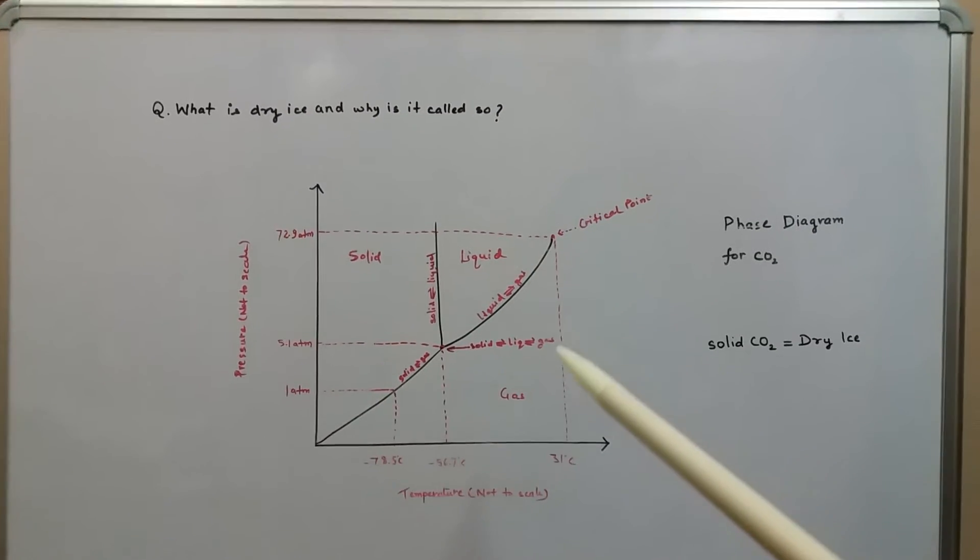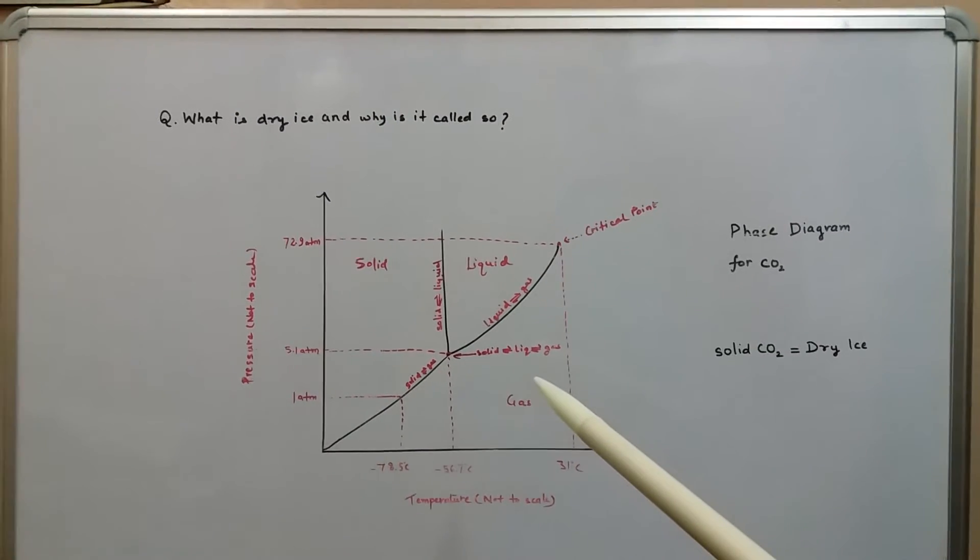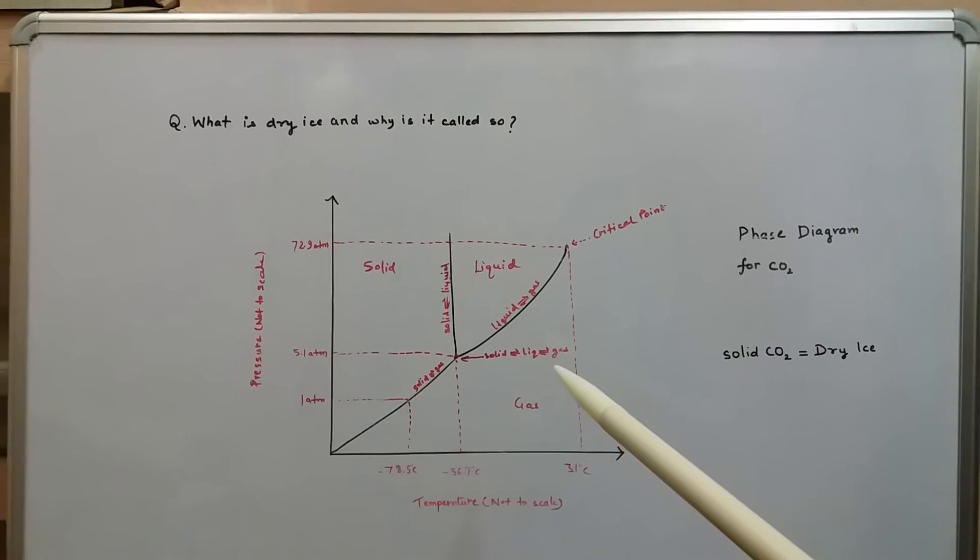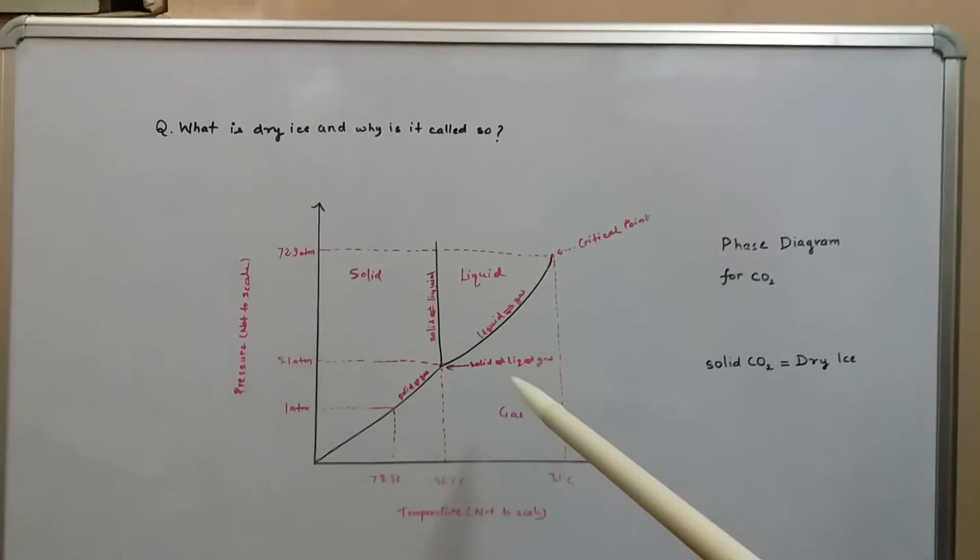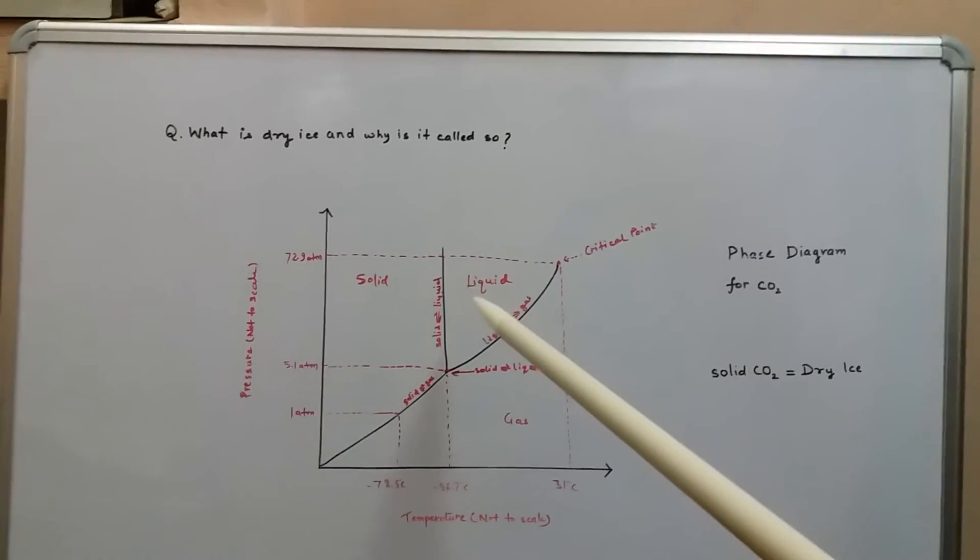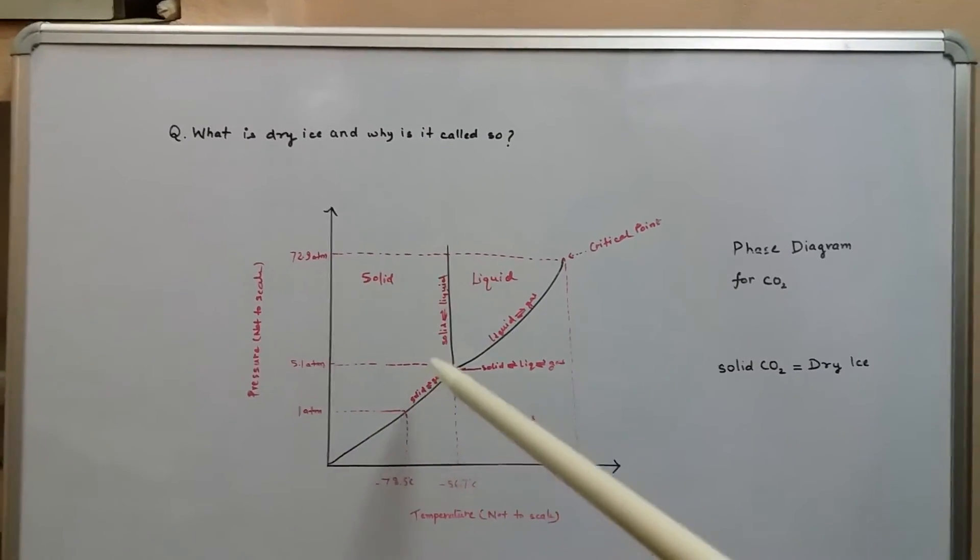This phase diagram represents the various states of carbon dioxide at different temperature and pressure conditions. Here you can see the gaseous state, the liquid state, and the solid state of carbon dioxide with respect to pressure and temperature.